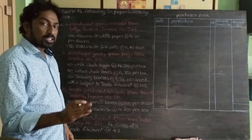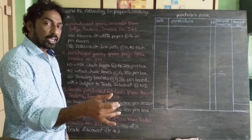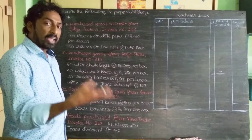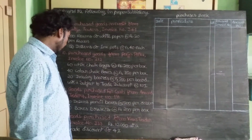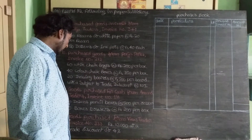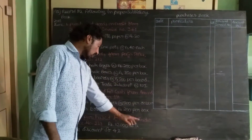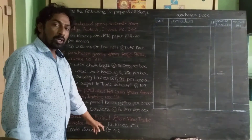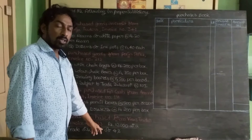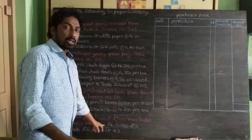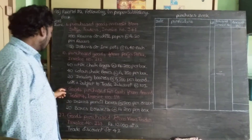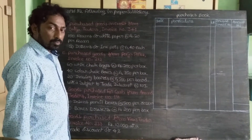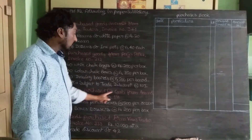Goods purchased per cash, or goods purchased paid by cheque, or any type of payment made — these are not recorded in the purchase book. So the 28th day transaction, where goods were purchased for cash, is not recorded in the purchase book.